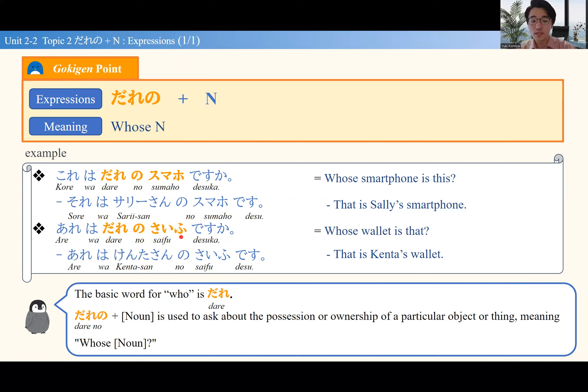だれの plus a noun lets you express 'whose item.' だれ actually means 'who,' so 'whose' is だれの. The structure is very straightforward. This is how to ask a question: whose item is this or that? だれの plus noun.